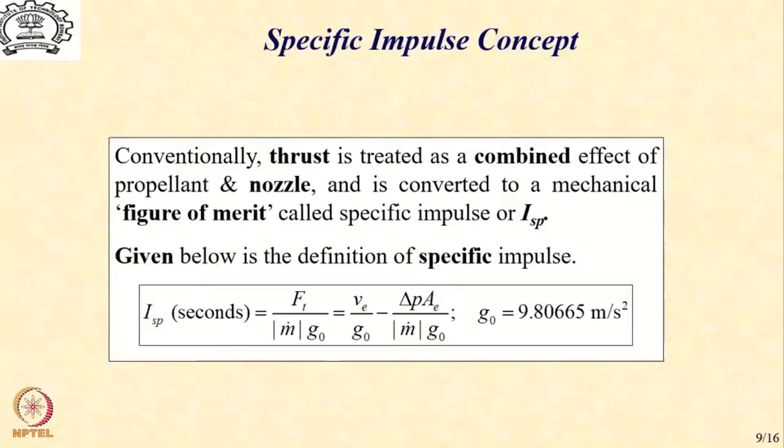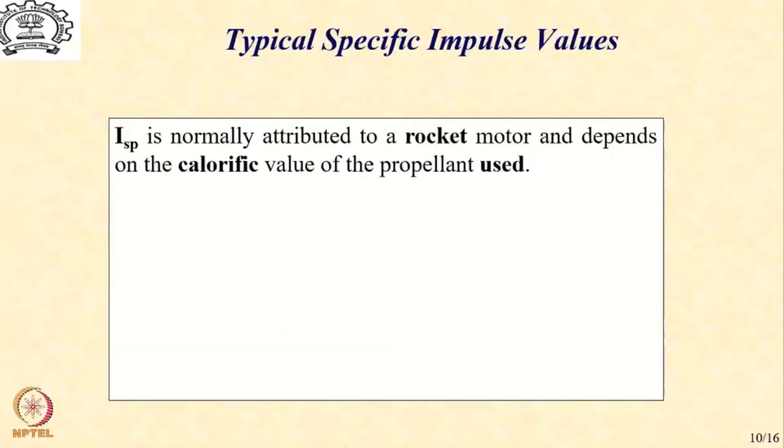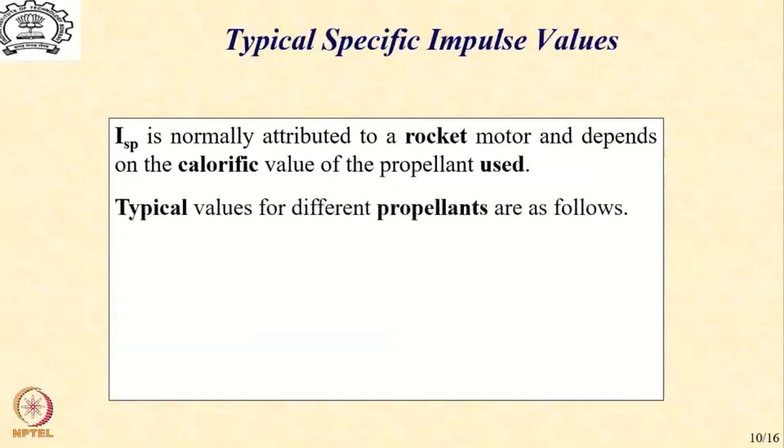In this definition, g_0 is an indicator of the acceleration due to gravity at sea level and a constant value is used. I_sp is normally attributed to a rocket motor which is a combination of the propellant and the nozzle, and that is why they are also designed and fabricated together as it depends on the calorific value of the propellant and the nozzle shape. For different propellants, we are going to get different values.